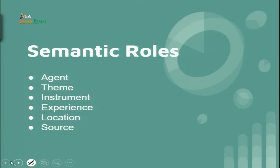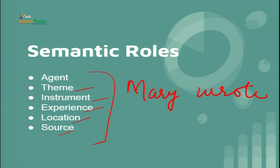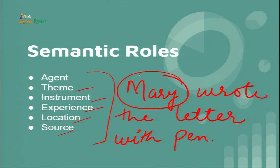There are some semantic roles to understand: agent, theme, instrument, experiencer, location, and source. To understand all these roles, consider the example: 'Mary wrote the letter with pen.' The agent is Mary — the entity that performs the action. The theme is 'the letter' — the entity that is involved in or affected by the action.